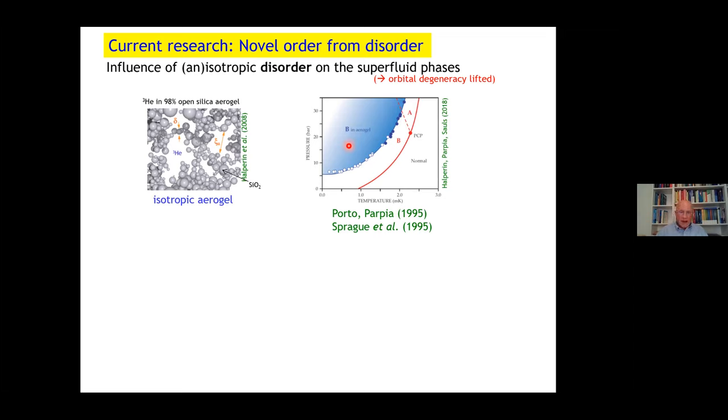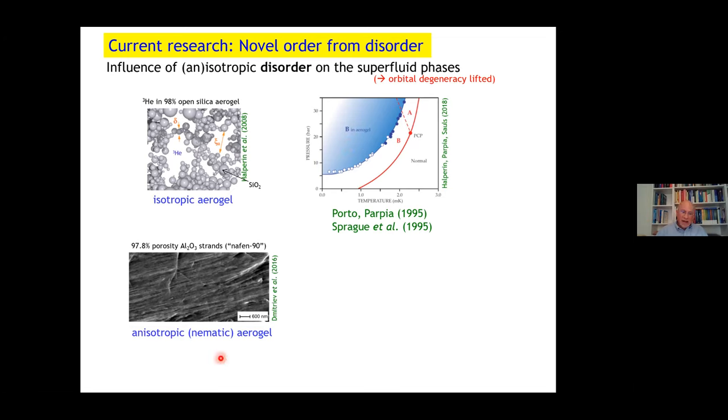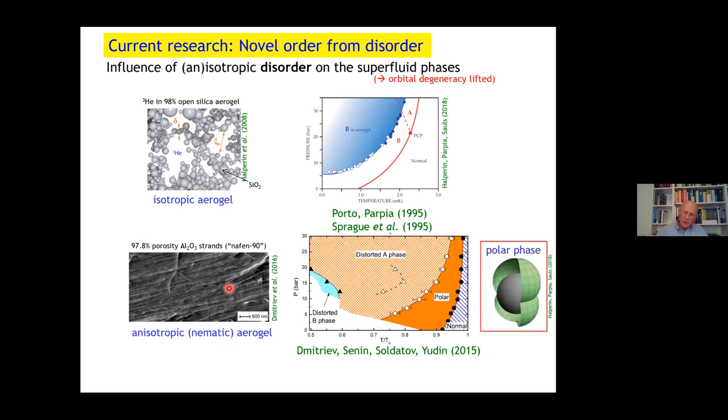More recently, an anisotropic, what is called nematic aerogel was used, made of aluminum oxide strands, given a preferred direction for scattering of the Cooper pairs. This has a tremendously strong effect. What was found is a new, the fourth phase was stabilized, the polar phase, which has a line node around the equator. So the phase diagram is changed from the normal one, goes into the polar phase. At lower temperatures, there is the polar distorted A phase and the polar distorted B phase. So a new phase, a fourth phase was discovered.